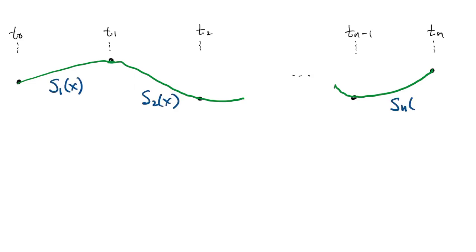Let me draw out the complete interval here. Here's our spline interpolant. On sub-interval number k, we let sk be the cubic polynomial on that sub-interval.